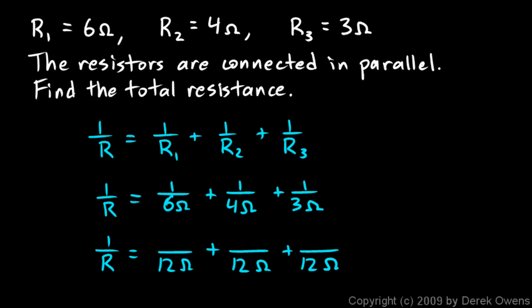The first one, 1 over 6 ohms, is the same as 2 over 12 ohms. The second one, 1 over 4 ohms, is the same as 3 over 12 ohms, and the last one, 1 over 3 ohms, is the same as 4 over 12 ohms. You should be able to see that 2 over 12 ohms plus 3 over 12 ohms plus 4 over 12 ohms will just be 2 plus 3 plus 4, which is 9 over 12 ohms.